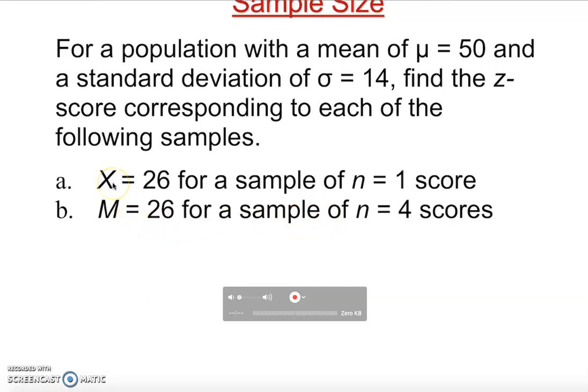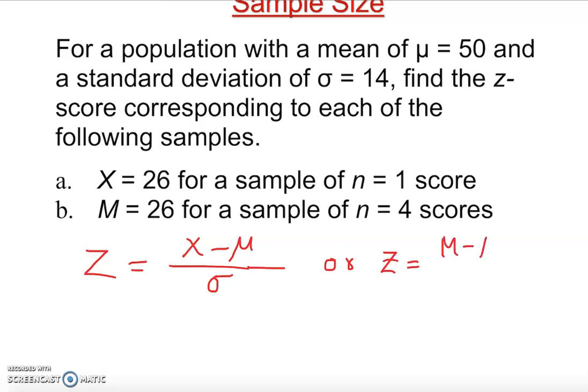Let's introduce the z-score formula. We already know what z-score is. z-score formula is z equals x minus the mean over standard deviation. Or z equals m minus sample mean minus population mean over standard error of the mean.